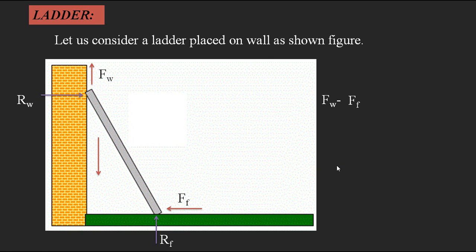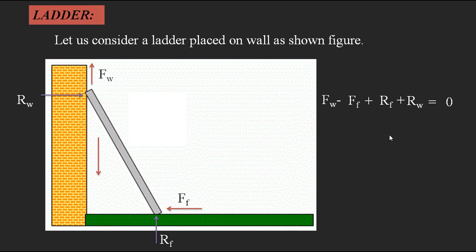Considering all forces: Fw acts in the positive y-direction, Ff acts in the negative x-direction, Rf acts in the positive y-direction, and Rw acts in the positive x-direction. The sum of all these forces should equal zero for equilibrium. This is the general analysis for frictional forces and normal reactions acting on a ladder in equilibrium.